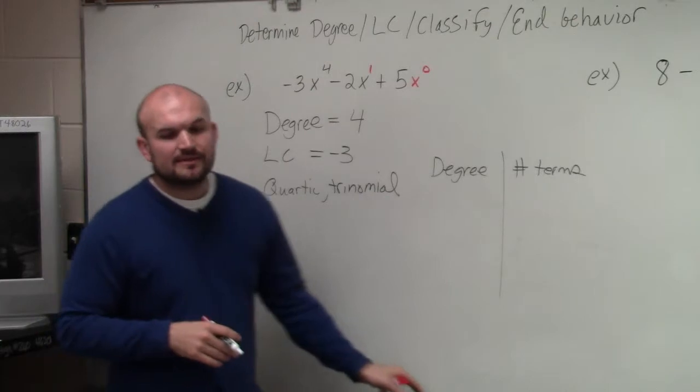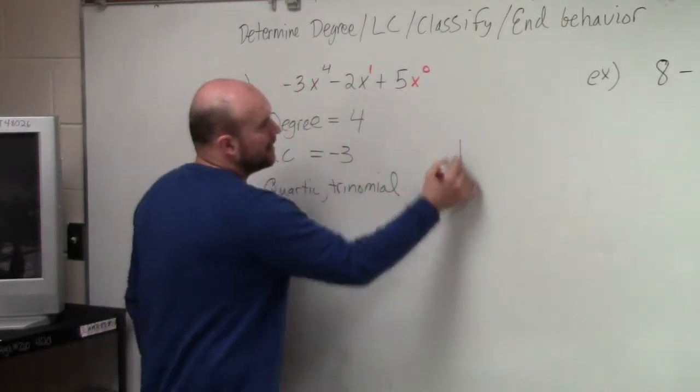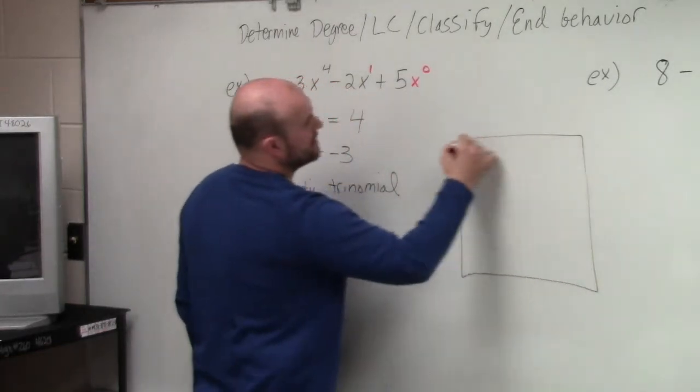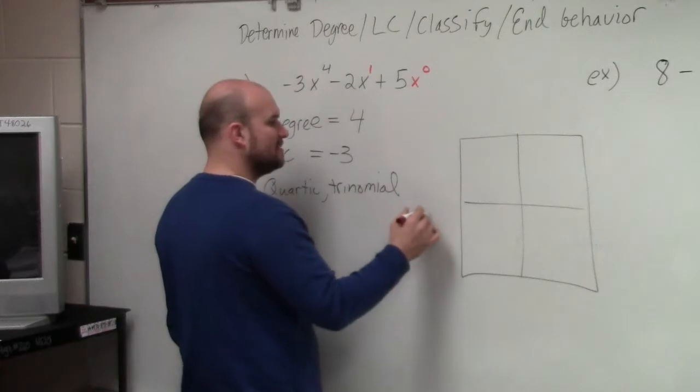Then the last thing we went over was determining end behavior. Now, when we determined end behavior, basically what we did was we had a box. And you guys should have in your notes we dealt with kind of the box. And from the box, we talked about the degree and the leading coefficient.